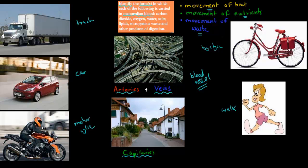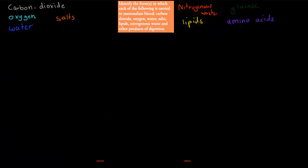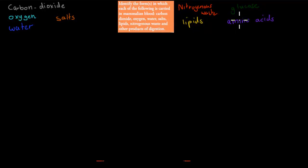The substances we have to cover are: carbon dioxide, oxygen, salts, water, nitrogenous waste, lipids, glucose, and amino acids. For a couple of these, there are more than one form. For the first two — carbon dioxide and oxygen — there are more than one form.